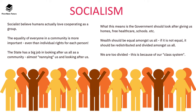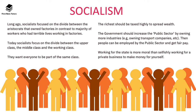From a socialist perspective the state has a huge job in looking after all of us as a community — almost nannying us. This is where the term 'nanny state' comes from: the notion that the state looks after us in all aspects of life, including providing free healthcare, free schools, and even free housing when needed. Furthermore, the socialist perspective believes that wealth should be equal amongst us all, and if it's not equal it should be redistributed and divided equally. As society stands we're too divided because of our class system — it's not right to have a middle class, upper class, and working class. Historically, socialists focused on the massive divide between aristocrats who owned factories and the majority of workers who had terrible living conditions.